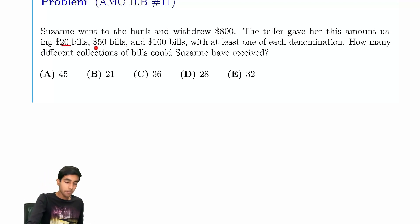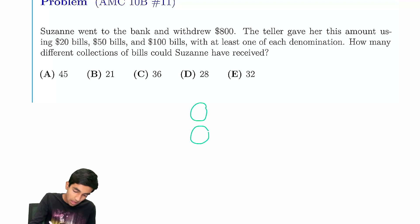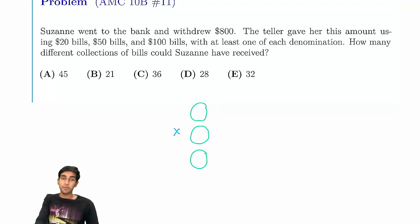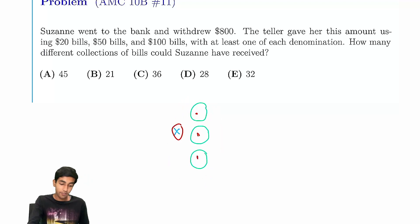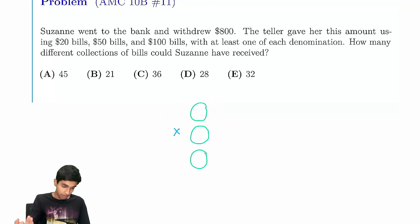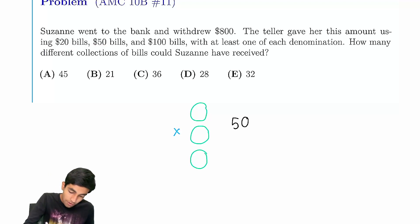Naturally, we notice that 20 times 5 is 100 and 50 times 2 is 100. So any collection of these bills will produce some number of hundred-dollar amounts. If we have x hundred-dollar bills, the amount they contribute is a multiple of 100. Since we must have at least one $20 and one $50, we need those bills to also form multiples of 100. With two fifties we can form a hundred, and with five twenties we can form a hundred.